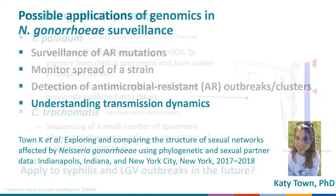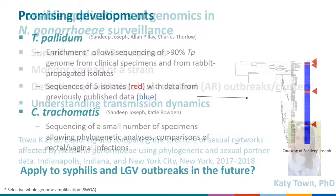Pivoting from Neisseria gonorrhoeae, I want to spotlight promising work being done by colleagues at CDC's laboratory branch on two other pathogens. They've had success sequencing T. pallidum from clinical specimens and rabbit-propagated isolates, and sequencing Chlamydia trachomatis from clinical specimens. In the future, it's possible that genomics may have a role in identifying the boundaries of syphilis and LGV outbreaks.